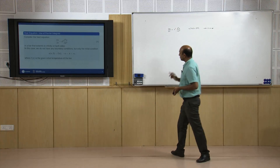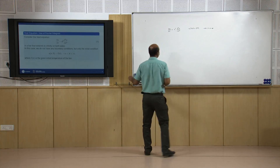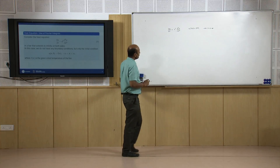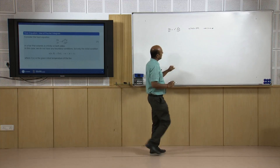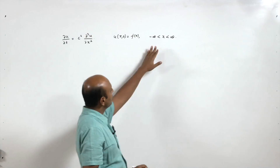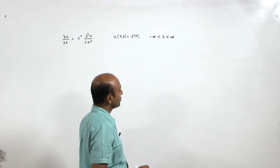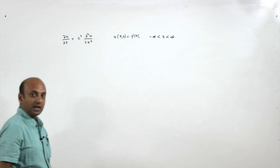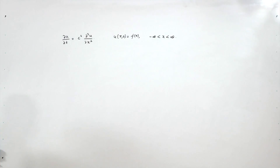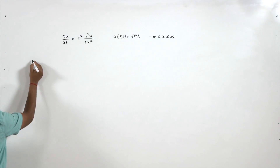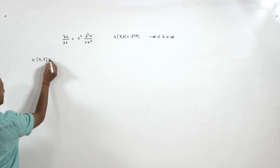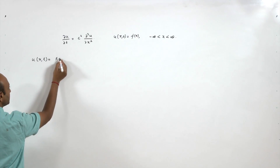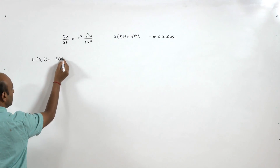Here f(x) is the given initial temperature of the bar. To solve this problem where we have an infinite bar, we will again use separation of variables.